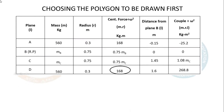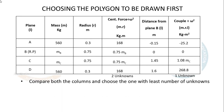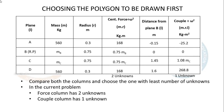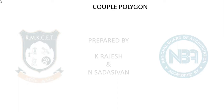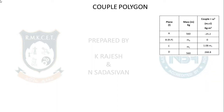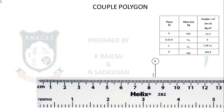Choosing the polygon to draw first: the force column has two unknowns, the couple column has one unknown — so do the couple polygon first. Taking the couple tabulation and angular position diagram, look at the horizontal direction. A is negative (−25.2), so draw from right to left. Scale 1:2; so 25.2 ÷ 2 ≈ 12.6 mm, drawn in the reverse (leftward) direction.